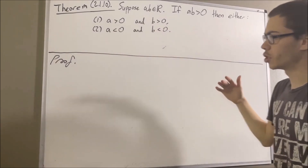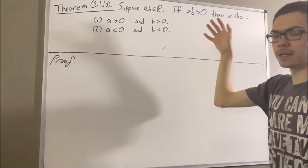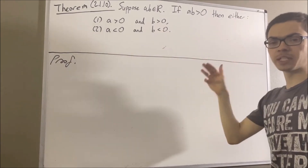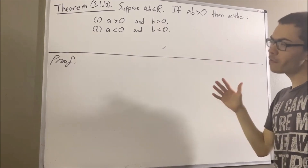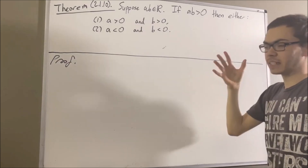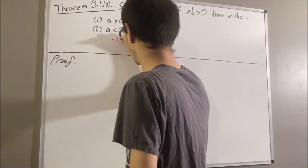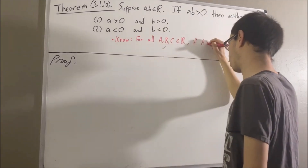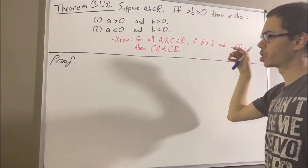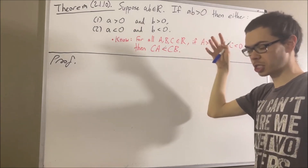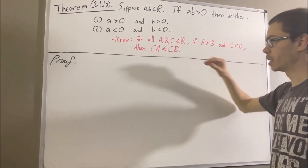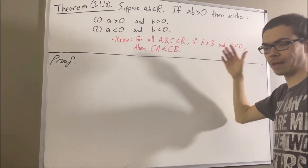Before we get into the proof of this theorem, we're going to rely on the following fact. It's the fact that for every three real numbers A, B, and C, if we have that A is greater than B and C is less than zero, then CA is less than CB. The book I'm basing this off of is Introduction to Real Analysis by Bartle and Sherbert, and in the book this fact is theorem 2.1.7c.